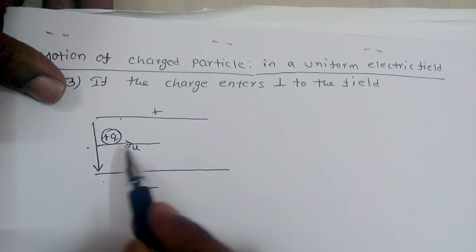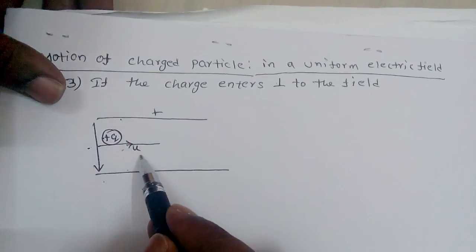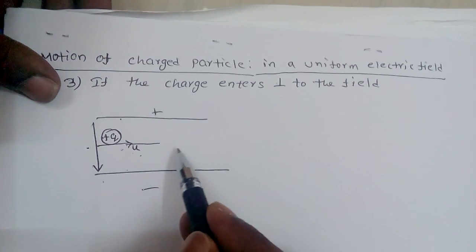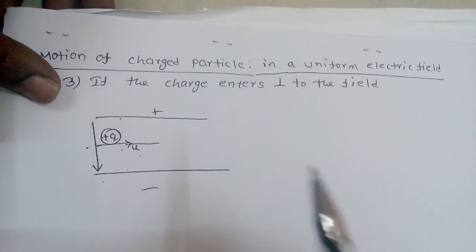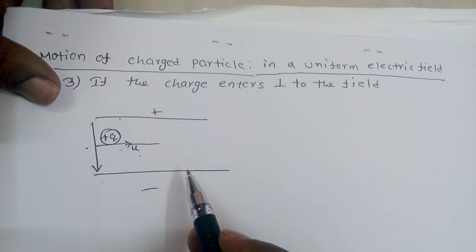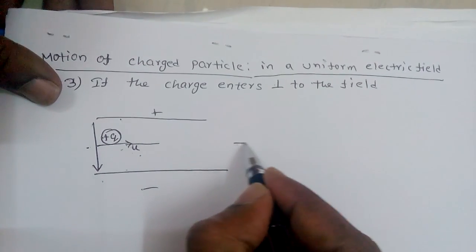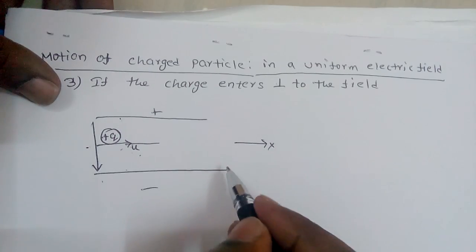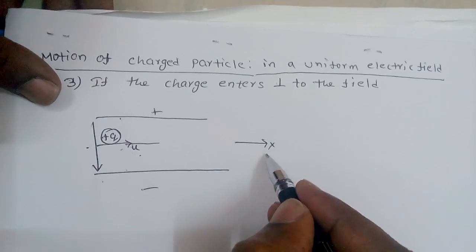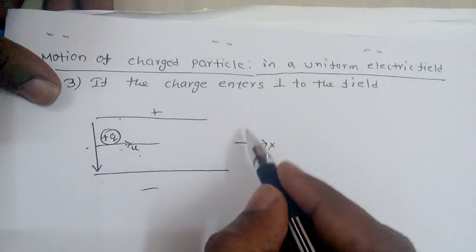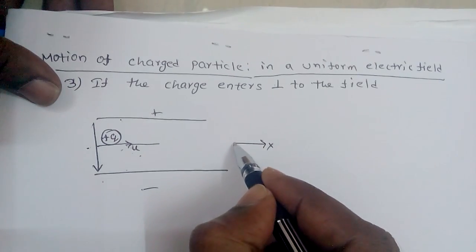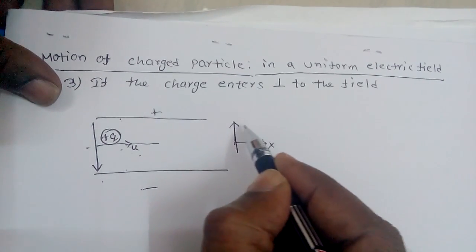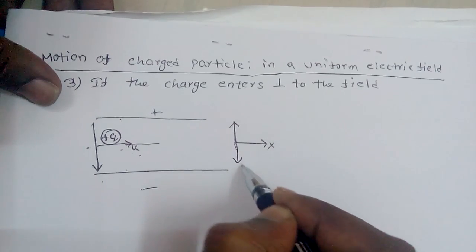Because of this initial velocity, the particle travels in a direction perpendicular to the electric field. I am considering this perpendicular direction as the x direction. The vertical direction, which is the electric field direction, I am taking as the y direction.